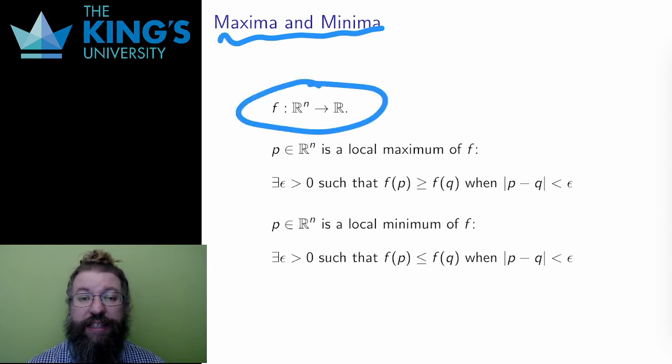Informally, a maximum is a point where the function value is larger than all other nearby points. I want to make this a formal definition. A point p is a maximum if f of p is larger than other nearby function values. So if q is a nearby point in the domain, then f of p must be greater than or equal to f of q.